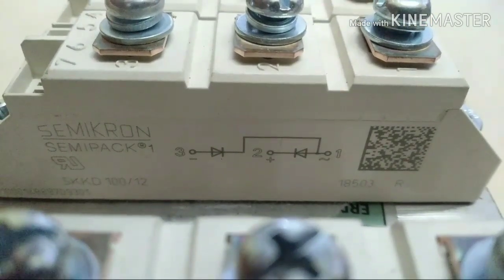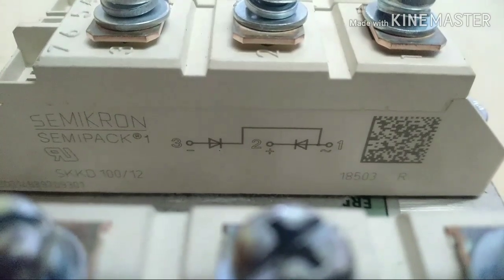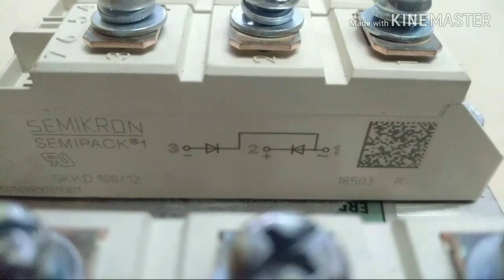As per the diagram, point one is our AC point, point two is our positive terminal, and point three is our negative terminal. Now we will test this RRA.